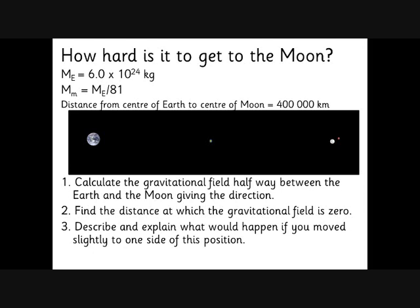This question is about going to the moon. Here's a roughly-to-scale diagram of the earth and the moon. At a point in the middle, we have a gravitational attraction to the earth and a gravitational attraction to the moon — we need to work out which is stronger. The earth's pull will be stronger because the distance is the same but the earth has much more mass. The mass of the moon is the mass of the earth divided by 81. We're going to find the distance at which the resultant gravitational field is zero — somewhere nearer to the moon, where the extra mass of the earth is cancelled out by the extra distance.